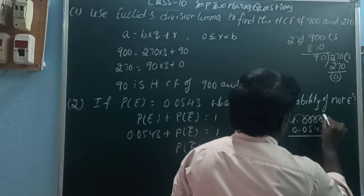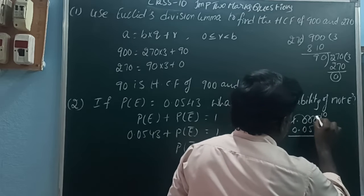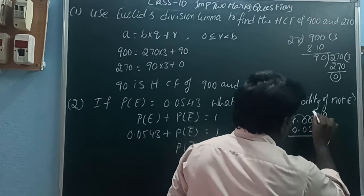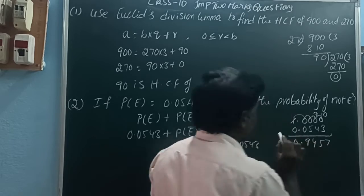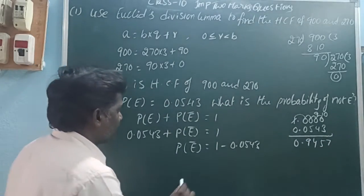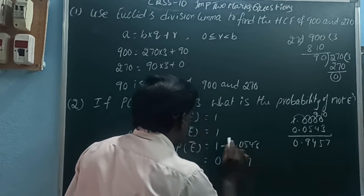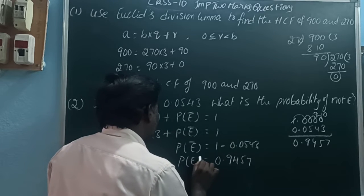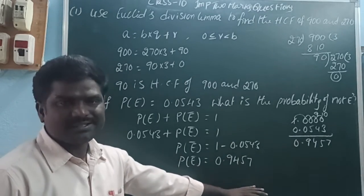Subtracting 0.0543, when you subtract, take the borrow. 10 minus 3 is 7, 9 minus 4 is 5, 9 minus 5 is 4. So we get 0.9457. Therefore, the probability of not E is 0.9457.